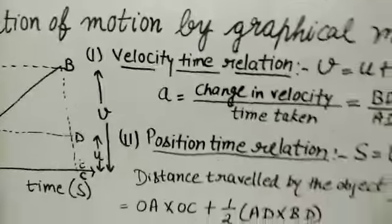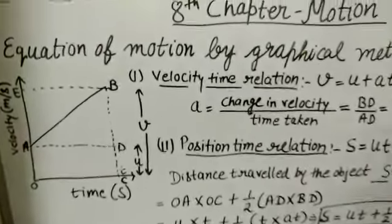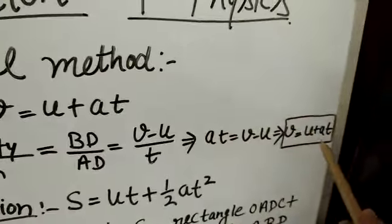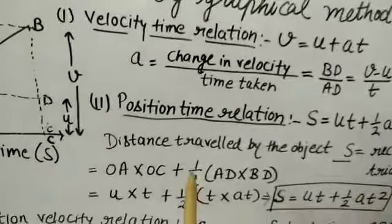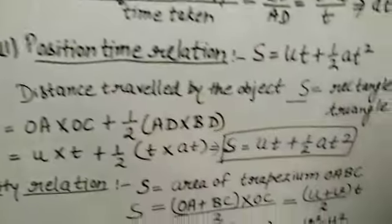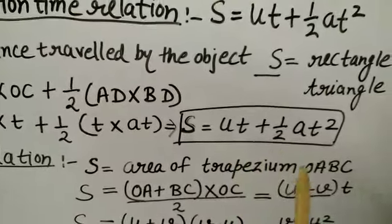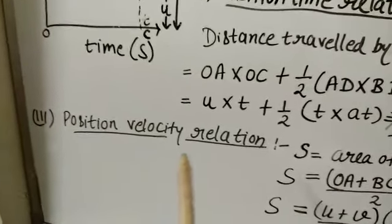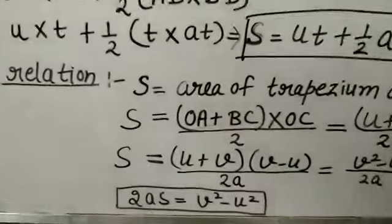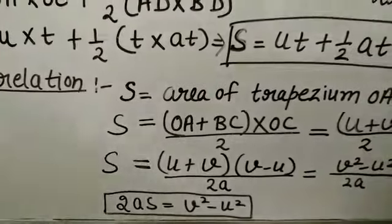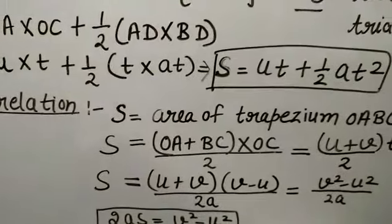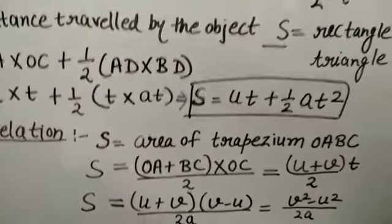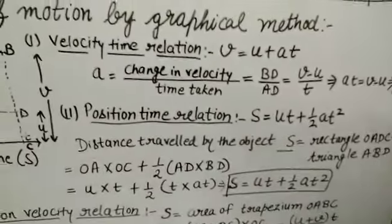In this lecture, we derived all three equations of motion. The first is the velocity-time relation: V = U + AT. The second is the position-time relation: S = UT + ½AT². The third is the position-velocity relation: 2AS = V² − U². Thank you, and practice numerical problems using these equations.